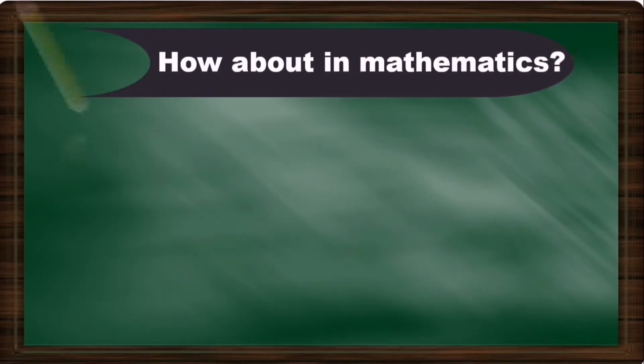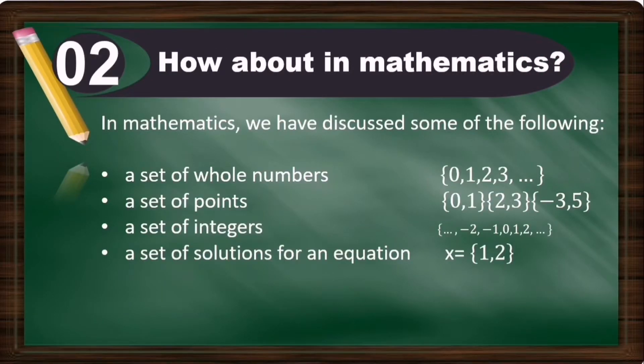How about in mathematics? In mathematics, we have discussed some of the following: a set of whole numbers with elements 0, 1, 2, 3, so on and so forth. A set of points, maybe in a Cartesian plane, so (0,1), (2,3), (-3,5). A set of integers, positive and negative. A set of solutions for an equation.